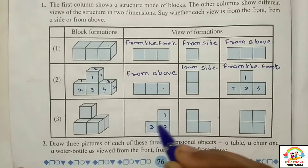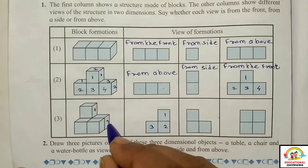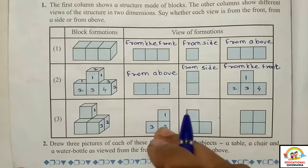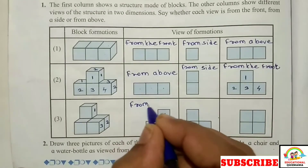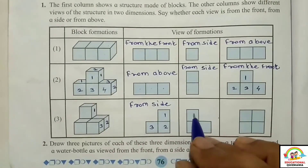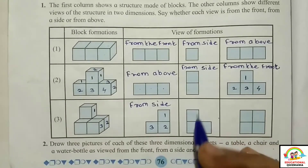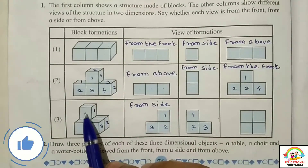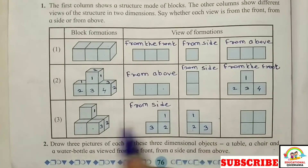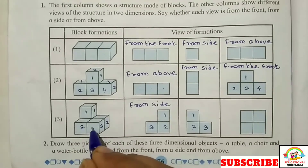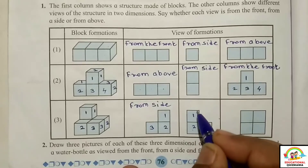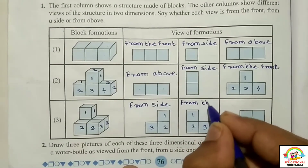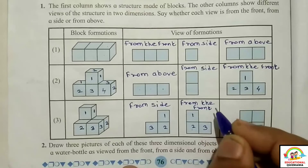From the side — one column, two columns, one, three columns. From the side is the right type. One column, one column, one column. From the front — from the front.